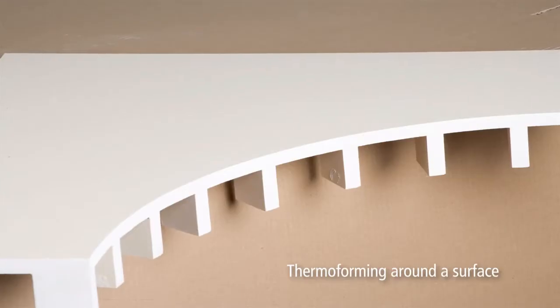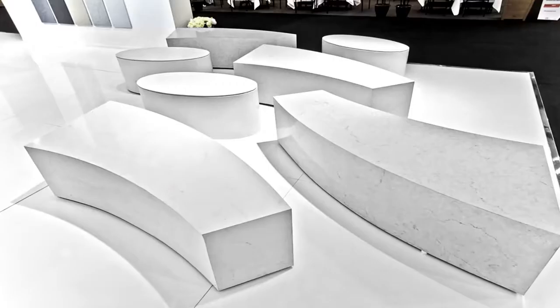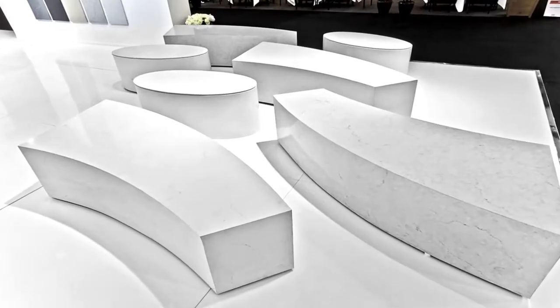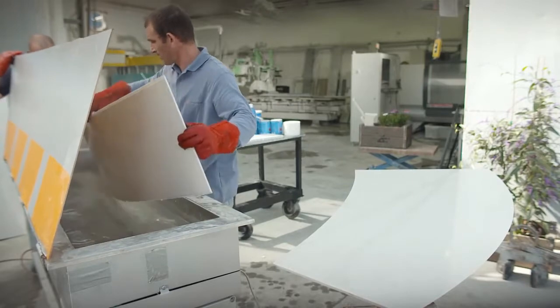Now we'll show you the thermoforming around a surface technique, which is used to create coffee tables like this one. Take the heated, flexible Caesarstone out of the tank and lay it on a flat surface.